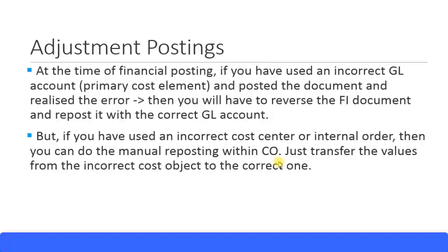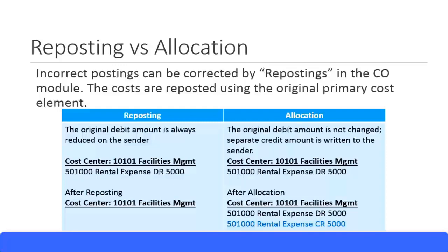SAP facilitates manual reposting via a transaction code. Incorrect postings can be corrected by doing reposting transactions, and these costs must be reposted with the original cost element. So if you used a salary expense GL account and created it as a primary cost element, you must use that same account to do the reposting. You should not use a different cost element.